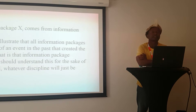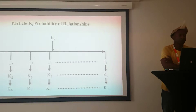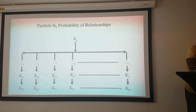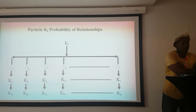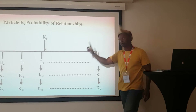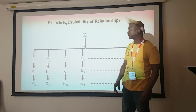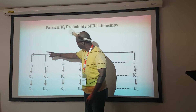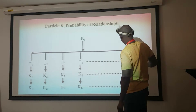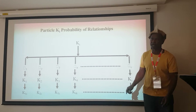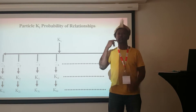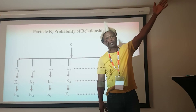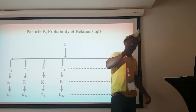Whatever discipline will just be about information packages. Where does particle K come from — be it a gluon or a quark? We have a particle KI that can react: it has a probability P1 of reacting with K1, a probability P2 of reacting with K2, and a probability Pi of reacting with Ki. So a particle itself — the electrons in me and the protons in me — are here by chance. They could be on Jupiter or Andromeda and I could have a different set of electrons and protons in me.